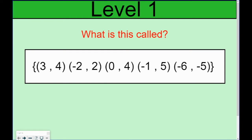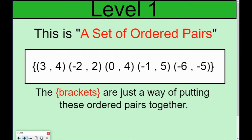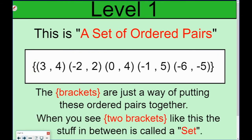So, the first thing is, what is this called? Well, this is called a set of ordered pairs. The brackets — these little curly things on the end — are just letting us know that we put all those ordered pairs together. When I have them all together with those two brackets, one at each end, they're called a set, hence the name set, and then we have all the ordered pairs in between them.